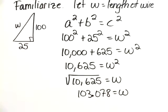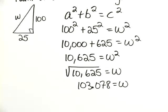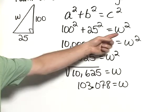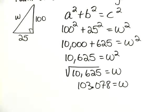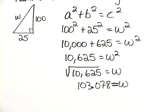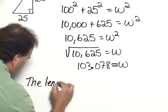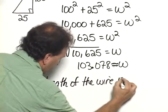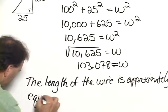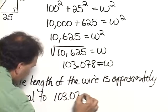We've carried out step 3 in the process, which is to solve the equation, and now step 4 would be to check our answer. You could do that by substituting 103.078 for the w in the Pythagorean theorem, leaving 25 and 100 there. Because this is an approximation, we know it won't come out exact, but if you do check, it does work. Therefore, we can say that the length of the wire is approximately equal to 103.078 feet.